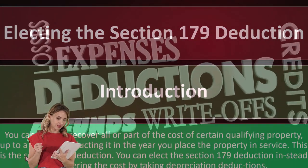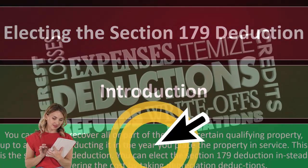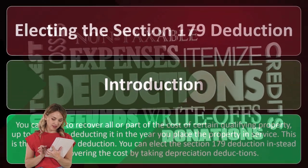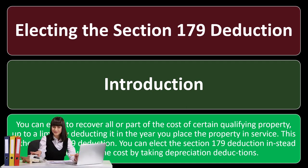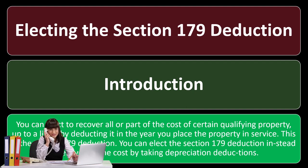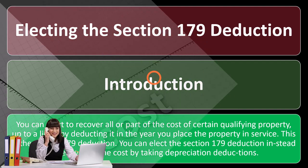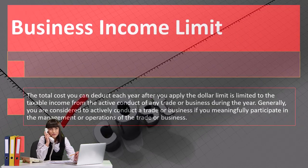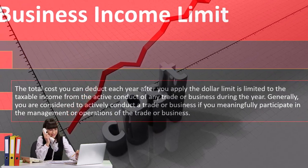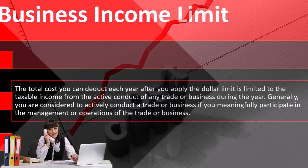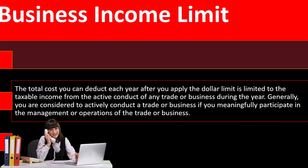As a recap: electing the Section 179 deduction allows you to recover all or part of the cost of certain qualifying property — up to a limit — by deducting it in the year you place the property in service. You can elect the Section 179 deduction instead of recovering the cost through regular depreciation deductions, which is a benefit if you can take it in the current year.